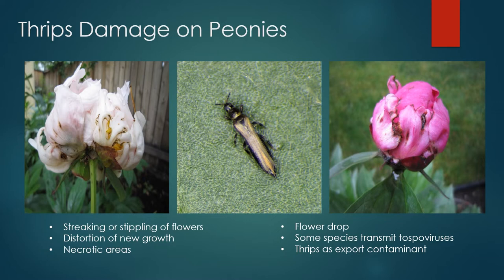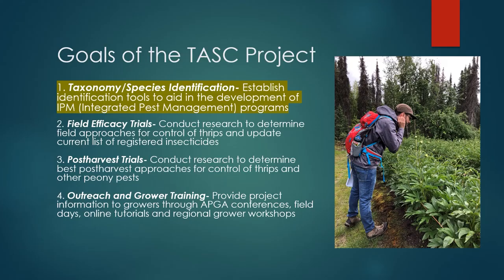Thrips are a unique pest in the sense that they are the only organism known to transmit tospoviruses. These tospoviruses include tomato spotted wilt virus, which is reported to infect peonies and is spread by at least three thrips species that were identified from peony samples in this study. Besides directly damaging the plant and indirectly vectoring tospoviruses, thrips themselves can also serve as a contaminant during the export of peony buds to international markets. Many countries have strict phytosanitary regulations that prohibit the import of plant materials containing certain species of thrips, or any thrips at all.